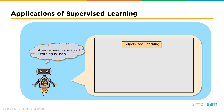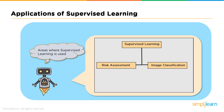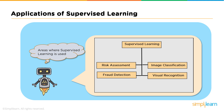Let's see some real-life applications where supervised learning is used. Supervised learning is used in risk assessment to assess risk in financial services or insurance to minimize the risk portfolio of companies. Image classification: Facebook recognizes your friend in a picture from an album of tagged photos — image classification is a key use case of supervised machine learning, involving convolutional neural networks. Fraud detection determines whether transactions made by a user are authentic or not. Visual recognition is the ability of a model to identify objects, places, people, and actions in images.